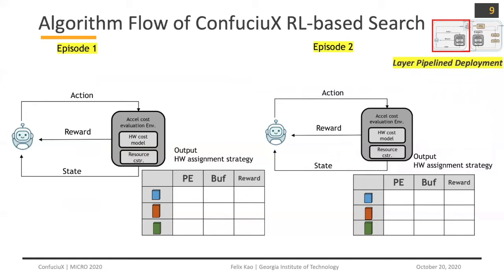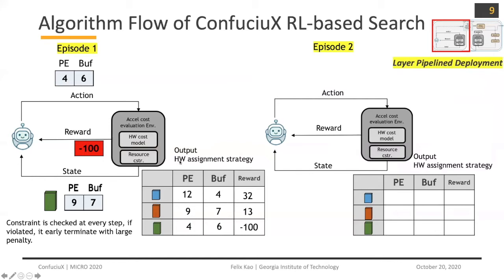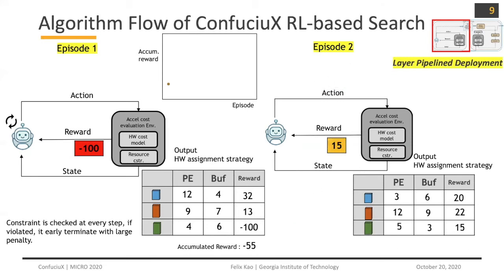Here is a walkthrough example of the RL-based search. You make an observation, take an action assigning PE and buffer, and get the reward. Then you make the next observation for the current layer and previous action, take the next action, get the next reward, and so on. Sometimes you get a negative reward because a constraint is violated. When the environment terminates, you calculate the accumulated reward and update the agent, then proceed to the next episode. The accumulated reward is plotted and goes up across episodes until it converges and the algorithm terminates.